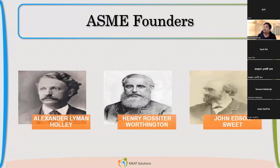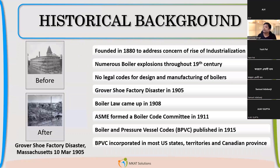ASME was actually founded by three industrialists at the start. Like everything, it started due to a failure. Around 1880–1890, there were lots of failures in boilers. Boilers were the first pressurized components widely used because steam was very much in use. There were lots of boiler explosions, and you can understand how catastrophic it was — such a pressurized, steam-containing component failing caused a huge loss of lives.